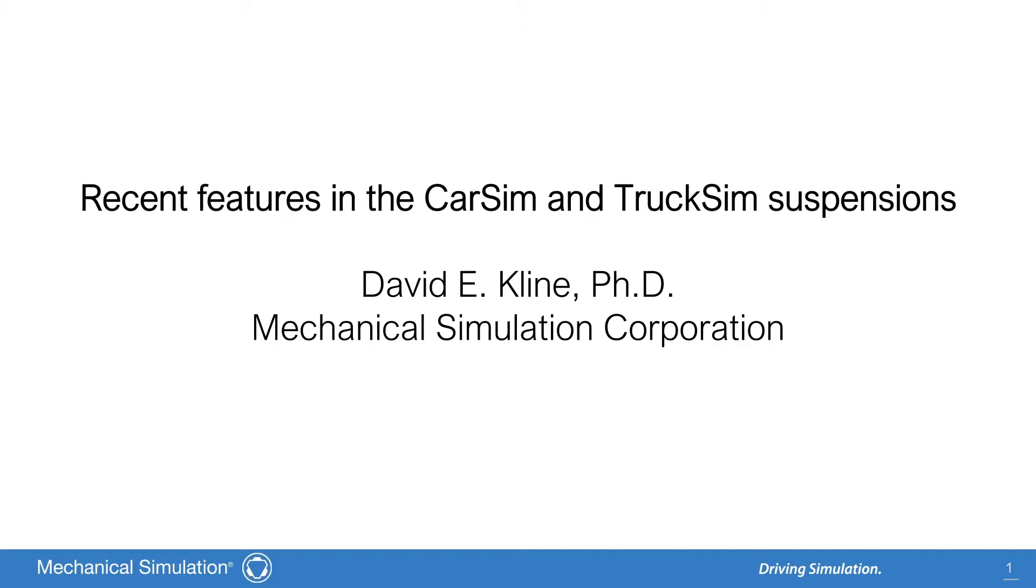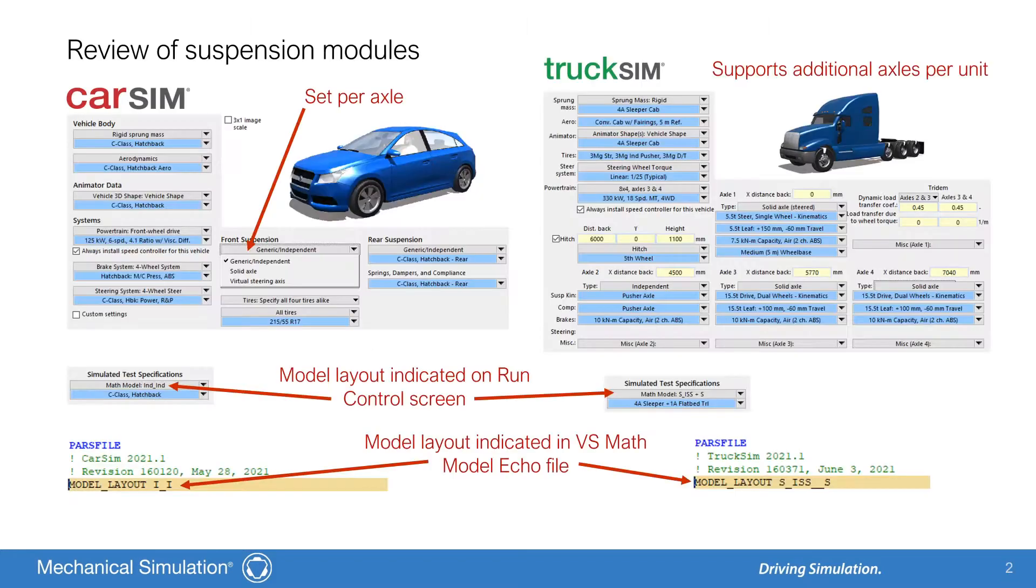First, let me give you an overview of the CarSim and TruckSim suspensions. The vehicle sim technology behind CarSim and TruckSim is used to produce parametric multibody modules, which can be assembled into various model layouts. Both CarSim and TruckSim include the independent and solid axle modules. A suspension module is installed on a per axle basis. In other words, a suspension module contains both wheels of an axle.